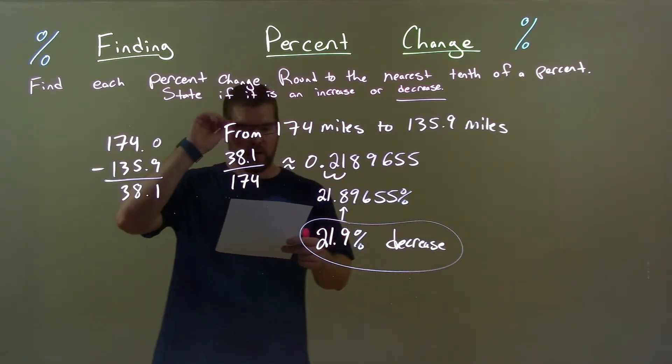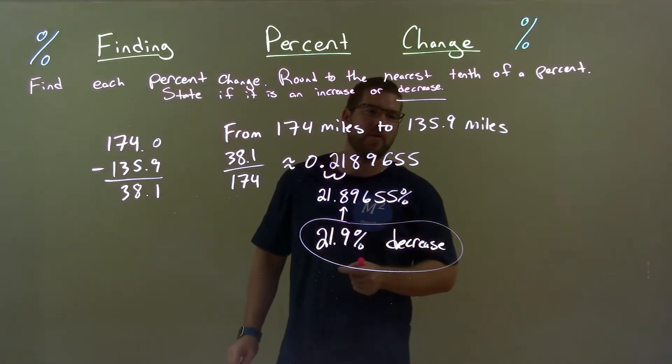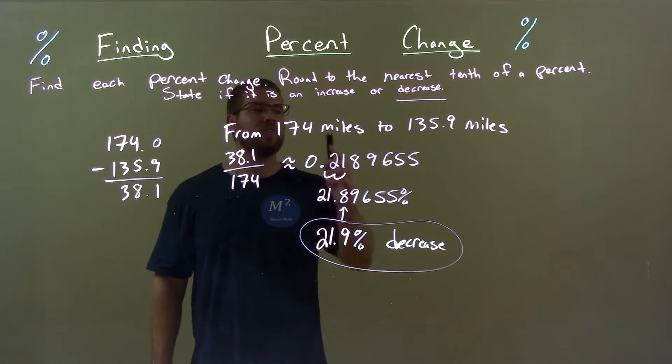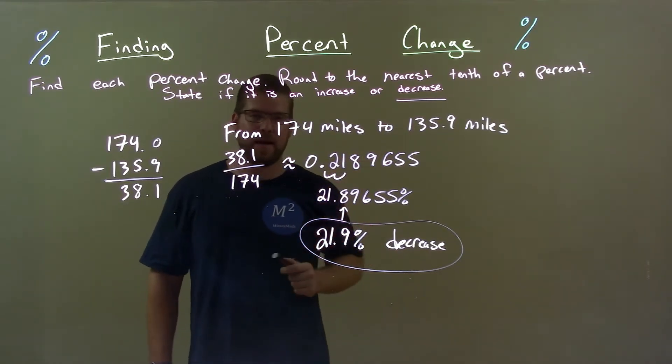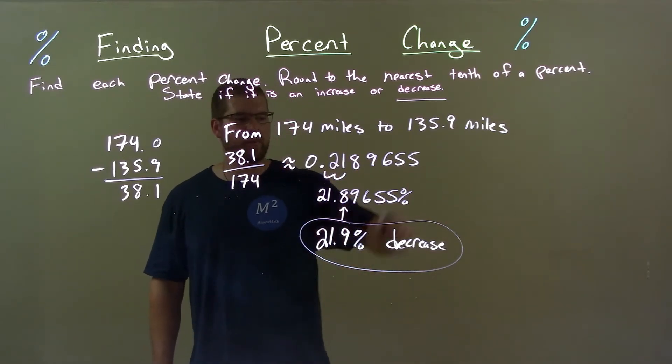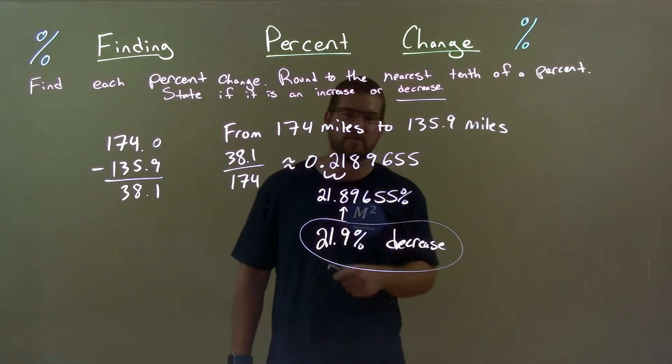Quick recap. We're given from 174 miles to 135.9 miles. We saw that was a decrease. Found the difference between the two, divide that by the first number. Got a decimal, converted that to a percent, rounded that percent, and got our answer: 21.9% decrease.